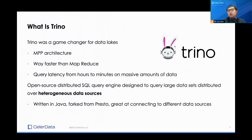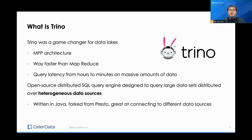So what is Trino? Trino is a query engine that was really a game changer when it came out for data lakes. It has an MPP architecture to do everything in memory. It's way faster than MapReduce — it brought the query latency from hours down to minutes on massive amounts of data. What it's really good at is querying over heterogeneous data sources. It's written in Java and really optimized toward writing great connectors really fast. That was exactly what users were asking for back then: to query their data in place, whether it's in a TP database or in a data lake, and get okay performance.